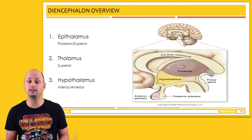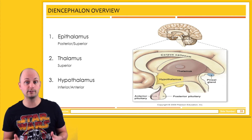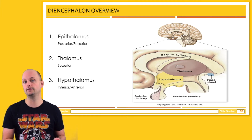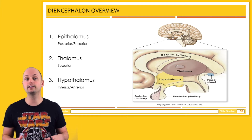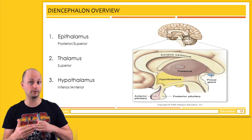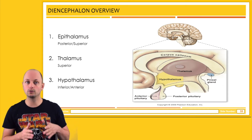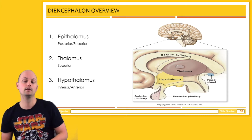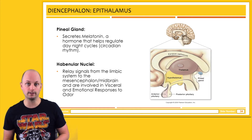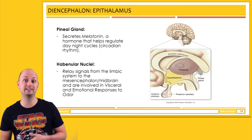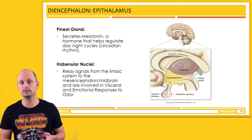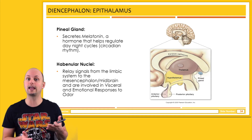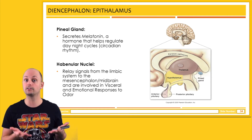Moving deeper, the next brain region we encounter is known as the diencephalon. This contains three structures of interest: the epithalamus, the thalamus, and the hypothalamus. The diencephalon is located just below the corpus callosum, which is the major white matter tract connecting the left and right hemispheres. The epithalamus contains the pineal gland, which secretes the hormone melatonin, important for regulating circadian rhythms — our sleep-wake cycle.